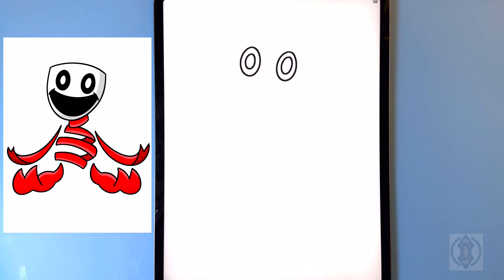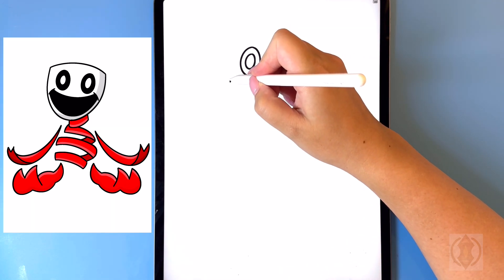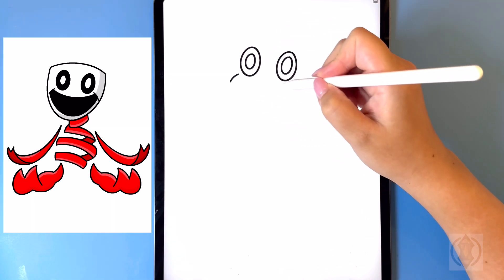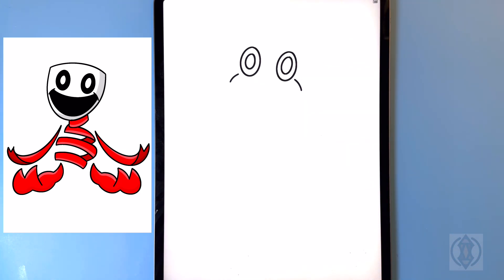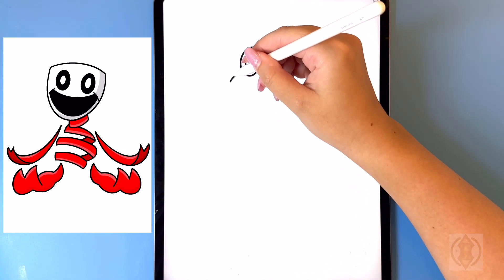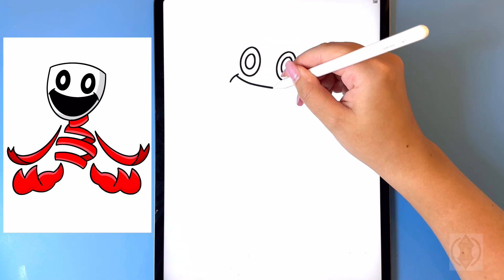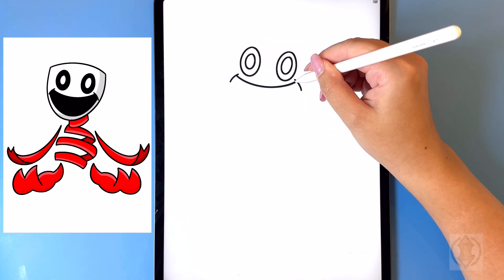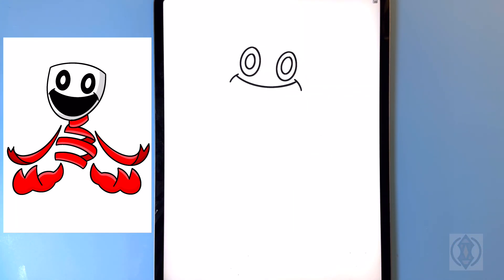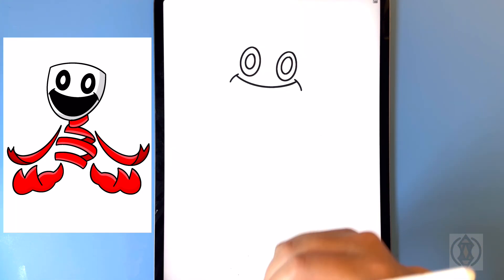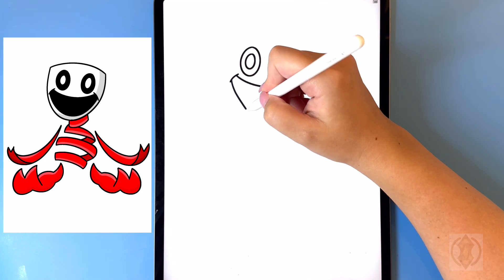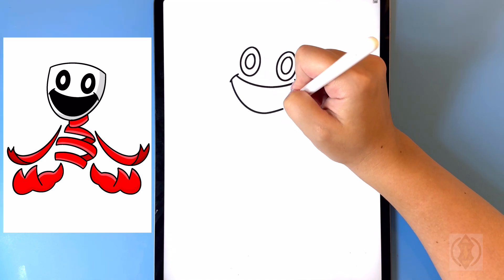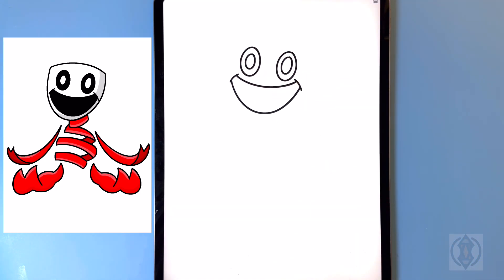Now let's draw in the mouth. On both corners we're just going to curve this line around and then in, and then closing this off on the top we're going to draw in a curved line from left to right. On the bottom we're going to draw in a nice big arch line curving that around and then back up.